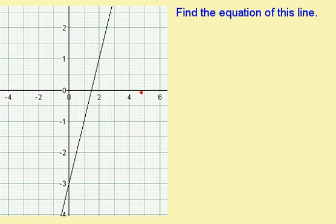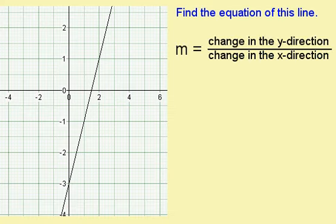When we don't have the same scale on the x-axis and the y-axis, we need to use a slightly different method. To find the gradient, we use this formula: m, the gradient, is equal to the change in the y direction divided by the change in the x direction.